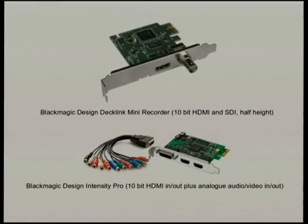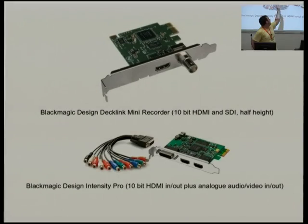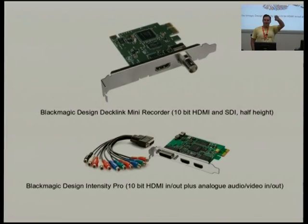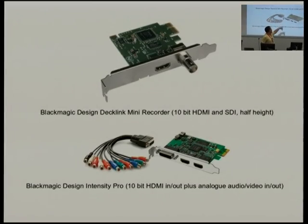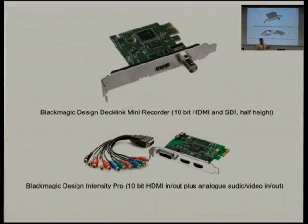These are the cards we're using — this one came out recently, like April last year. It's half height, which is really nice because you can make nice small PCs with it. It's got SDI in, so you can use professional cameras with SDI. It's also got 10-bit HDMI in. There's a complementary product — the Decklink Mini Recorder. There's also a Mini Monitor which outputs HDMI signal, and there are GStreamer plugins for that. Then there's the Intensity Pro, which is more expensive but has analog inputs and combines recorder and monitor function.